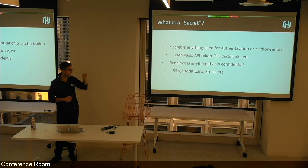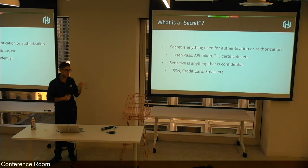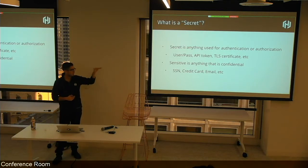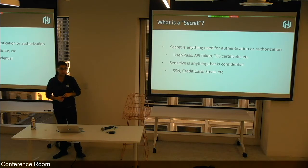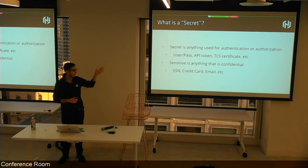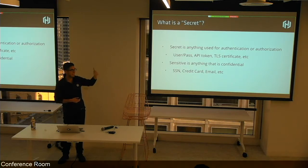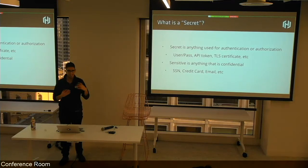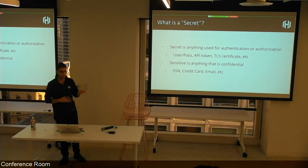Sensitive data is a grade below secret — it doesn't directly grant access. It's things like social security numbers, credit cards, emails. The reason we treat these as distinct is the orders of magnitude are very different. For most organizations, secrets number in the hundreds to maybe a hundred thousand, whereas sensitive information can easily be millions or tens of millions of records. The scale at which you manage these two is very different, so your approach has to be different as well.